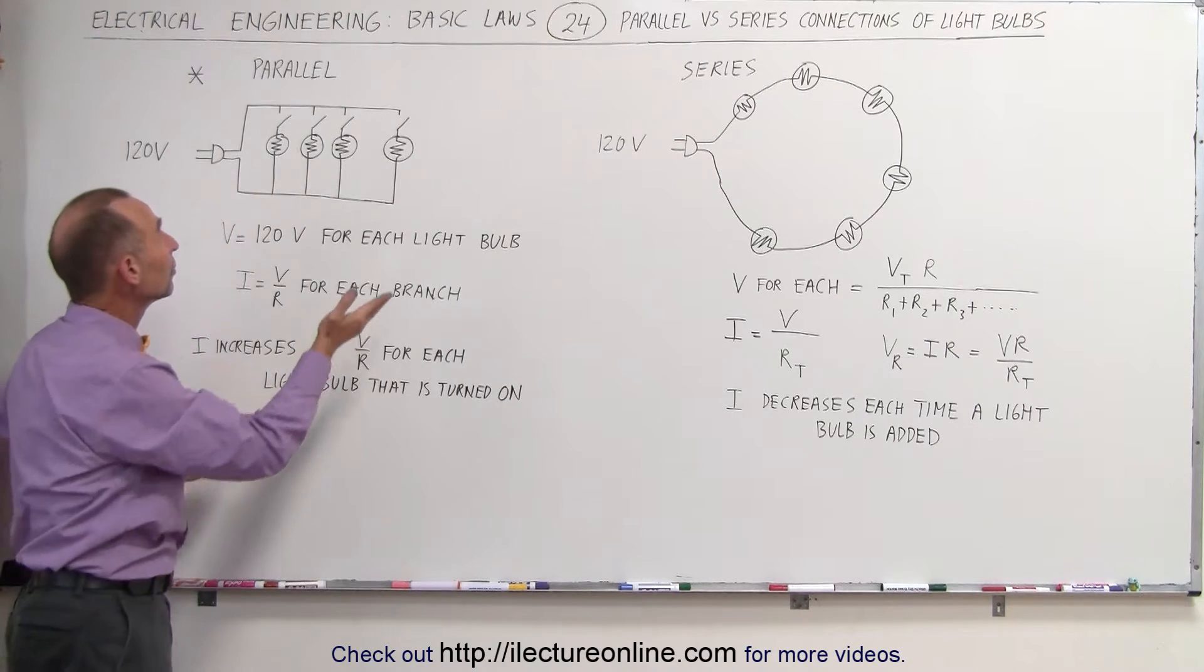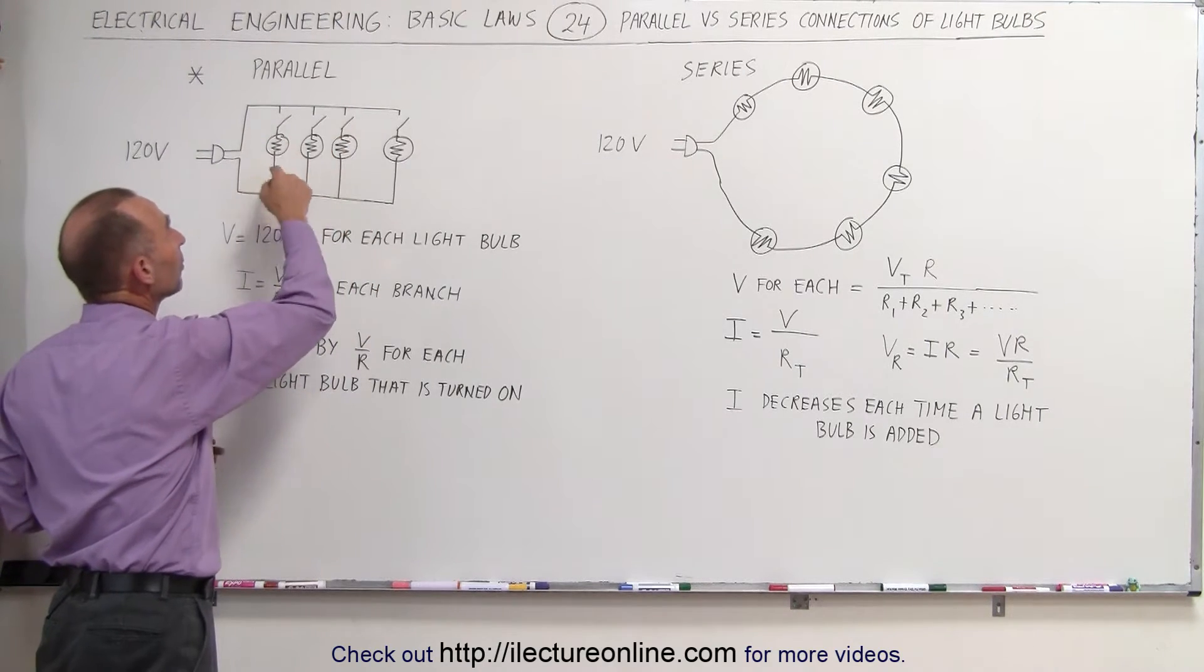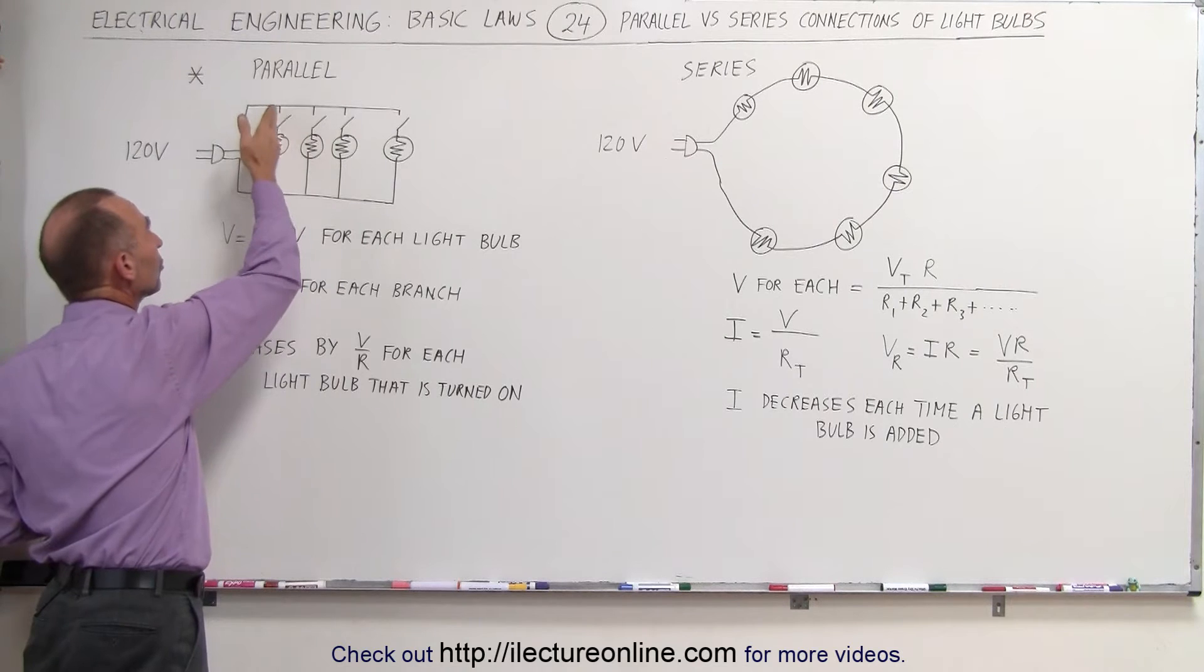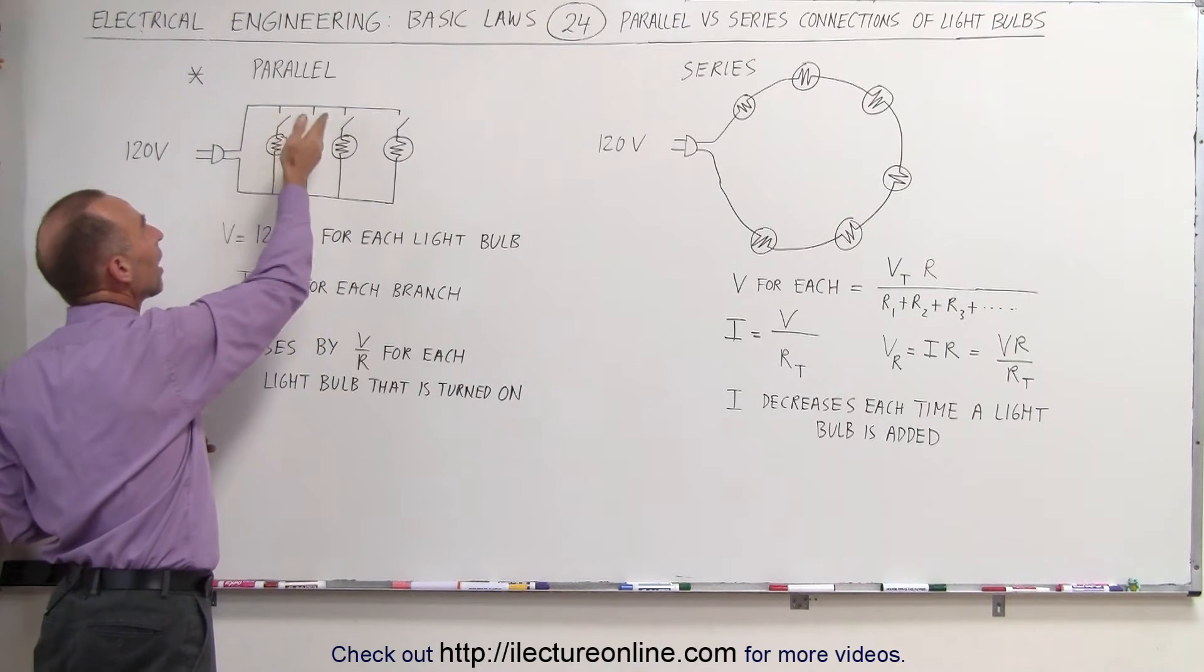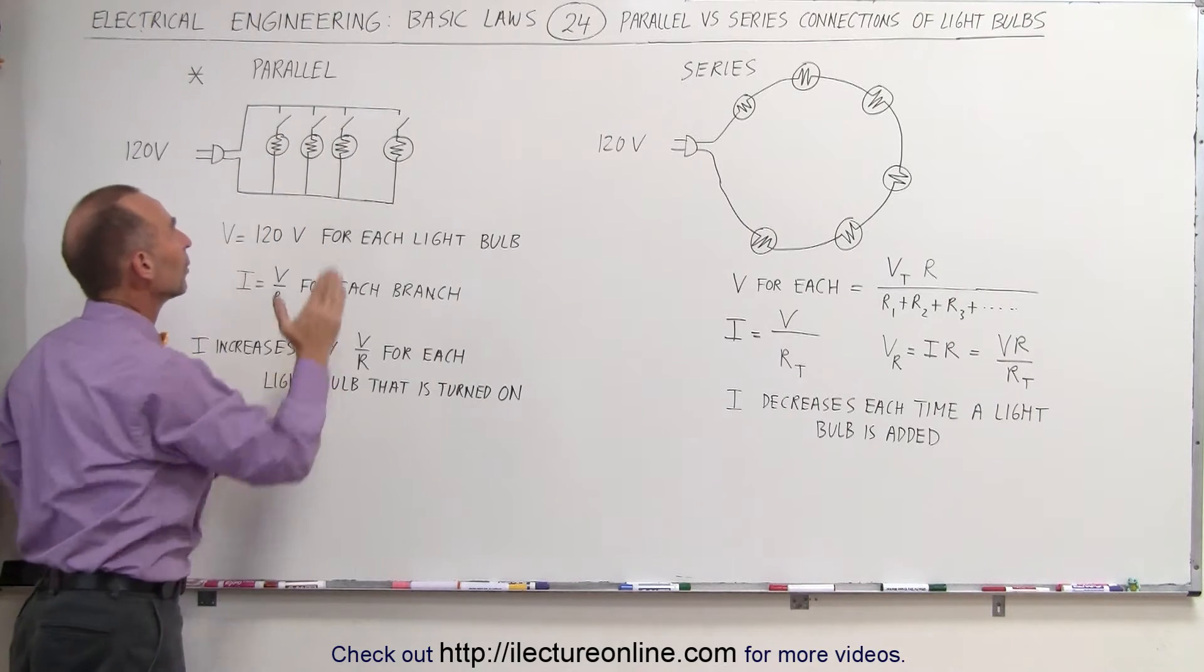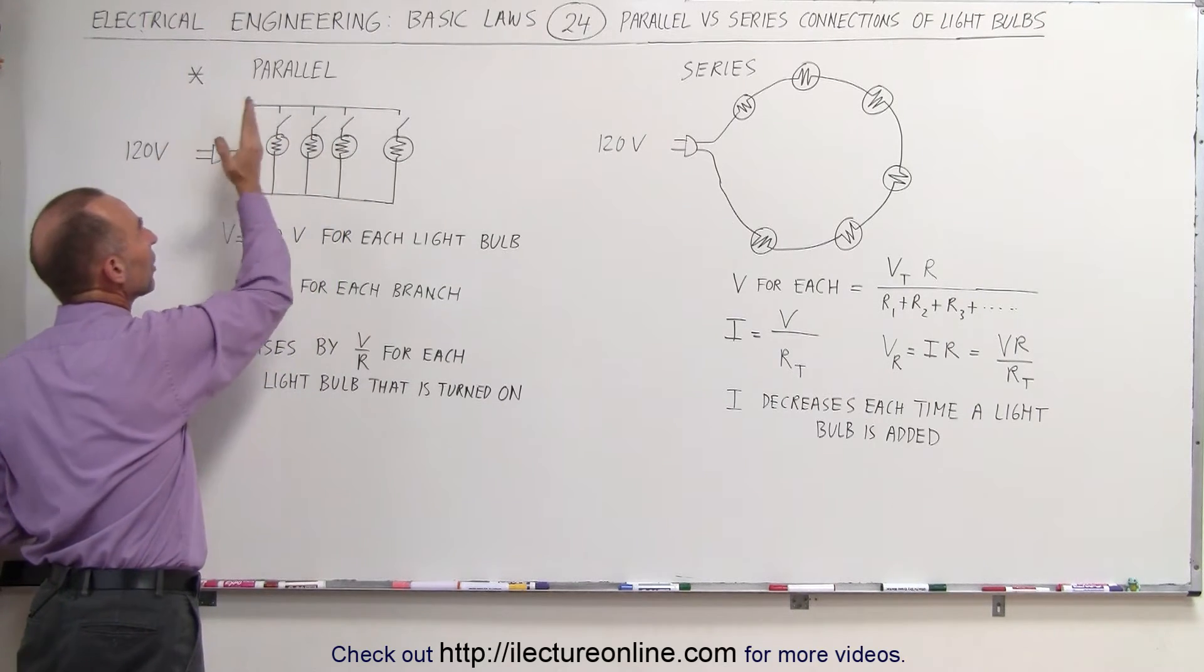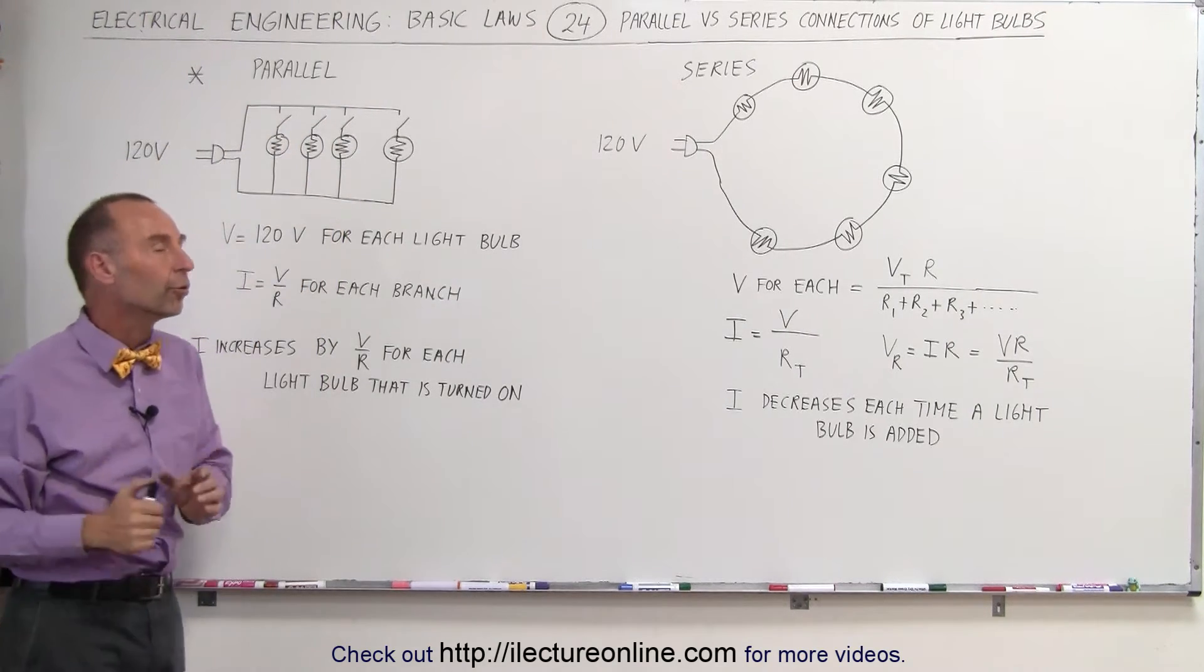In this way we can turn on and off light bulbs at will. Anytime a switch closes a light bulb will be turned on and it doesn't matter how many light bulbs we turn on. They will always be connected to 120 volts and each light bulb will have 120 volts across it.